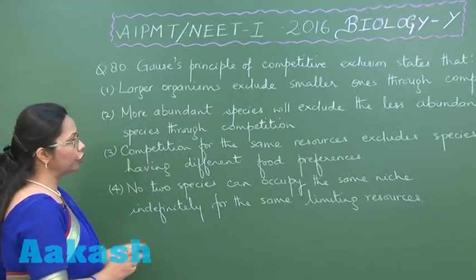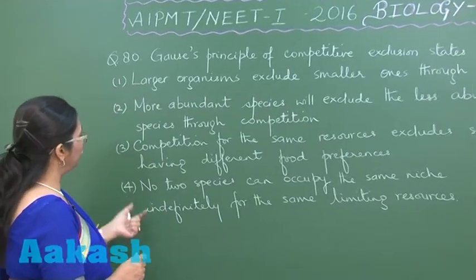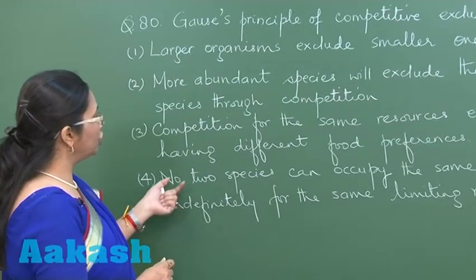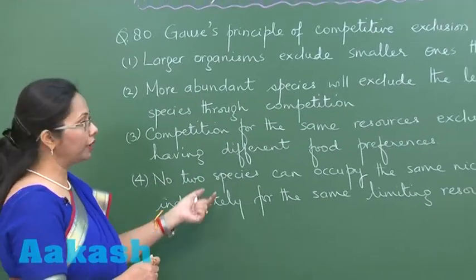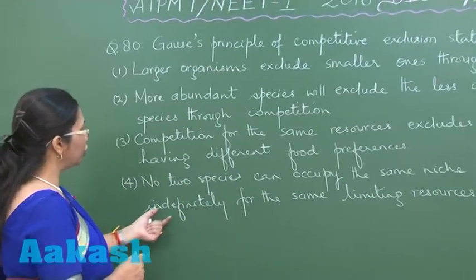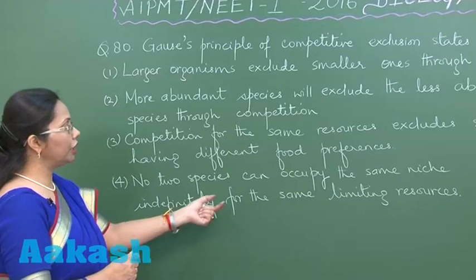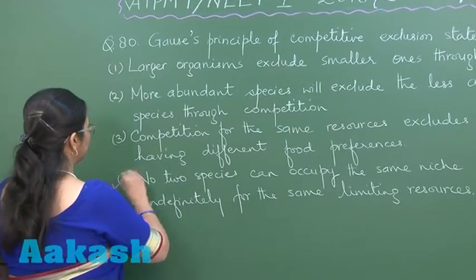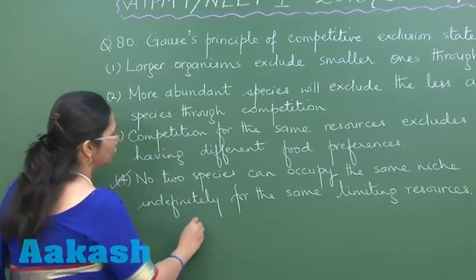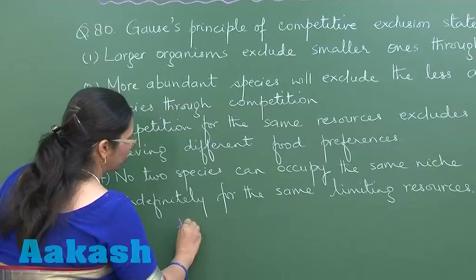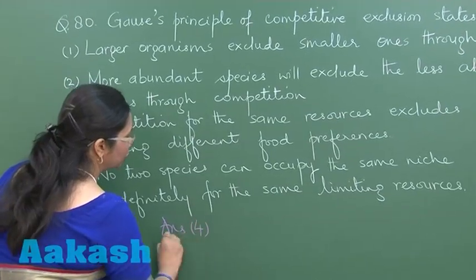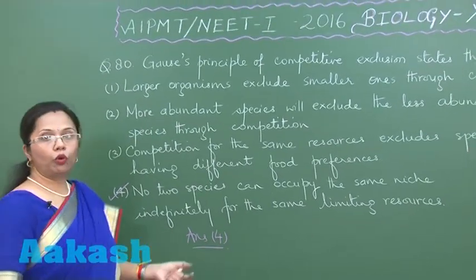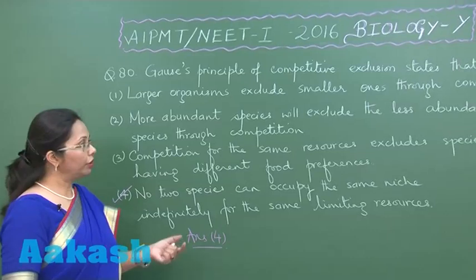Reading all four statements, we find that the fourth statement — 'no two species can occupy the same niche indefinitely for the same limiting resources' — is the right answer. So the answer is option 4. Let's move on to question number 81.